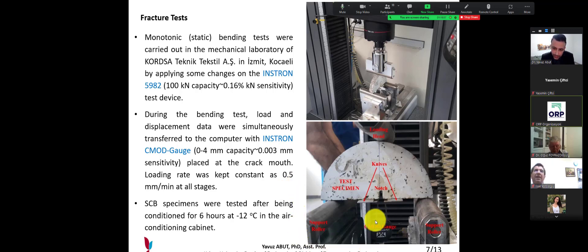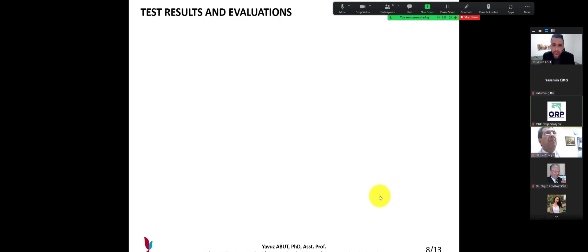You can see the CMOD gauge here. It has 4 mm capacity and 0.003 mm sensitivity, and it attended to crack mouth. Loading rate was kept constant as 0.5 mm per minute at all stages. SCB specimens were tested after being conditioned for 6 hours at minus 12 degrees Celsius in the air conditioning cabinet.